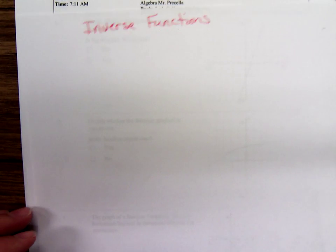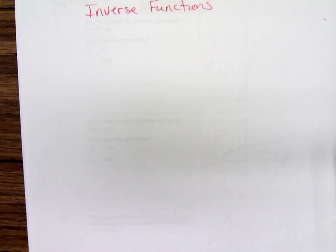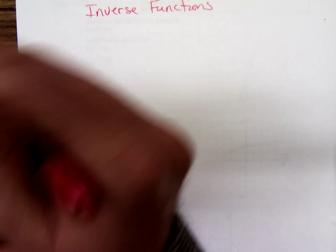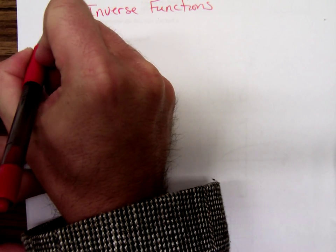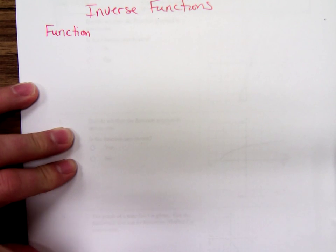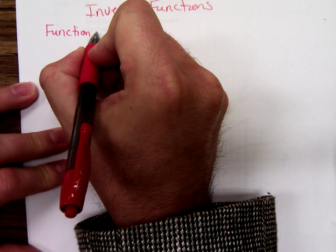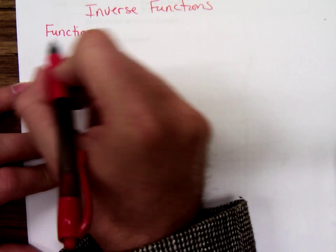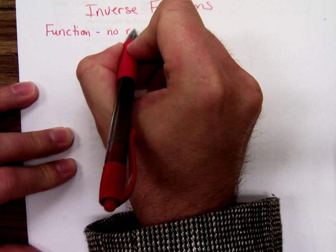This is Anthony Priscilla, working with inverse functions with this college algebra class today. Remember that a function is a rule which assigns to each x value only one, exactly one, y value. When looking at ordered pairs, functions have no repeated x values.